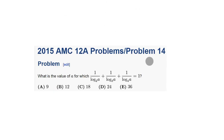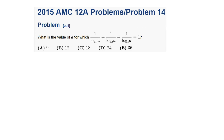So let's move on to AMC 12A 2015, problem number 14. What is the value of a for which 1 over log base 2 of a, plus 1 over log base 3 of a, plus 1 over log base 4 of a equals 1? We have five possible answer choices. If all else fails, we could try to plug in those choices and see if one equals 1, but that's not the best solution. These are fractions, so we need like bases to add them — we ought to use one of the properties of logarithms we just went over.